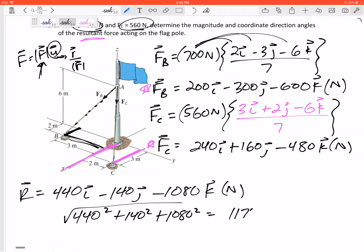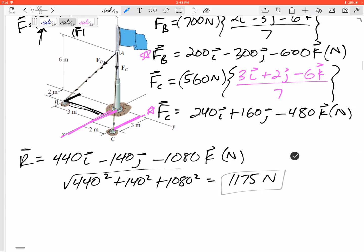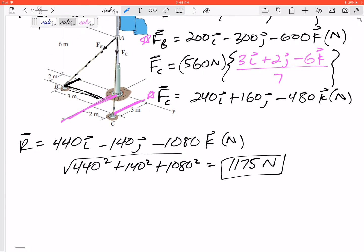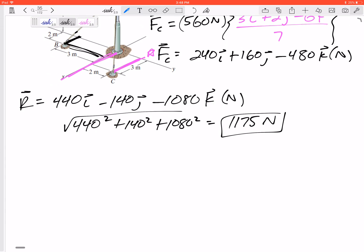What are its coordinate direction angles? For coordinate direction angles, I'm going to think R equals R times U. I know that's 1175, I know that's all that written in components. Let me find the U. So 440 in the I minus 140 in the J minus 1080 in the K equals 1175 times cosine alpha I plus cosine beta J plus cosine gamma K.